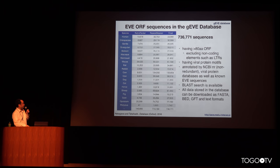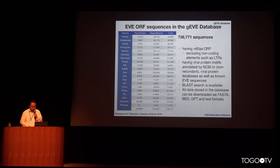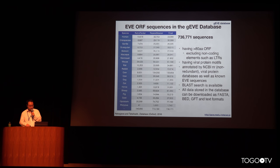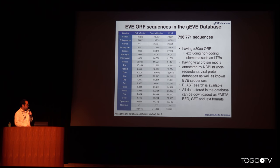We obtained 736,000 sequences in 20 mammalian genomes — all having open reading frames of more than 80 amino acids, excluding non-coding elements such as LTRs, and all having at least one viral protein motif. They are annotated by the NCBI NR database, viral protein database, and non-EVE sequences. BLAST search is available in the database, and all data can be downloaded in FASTA or GFF3 format.